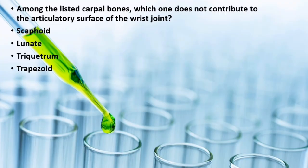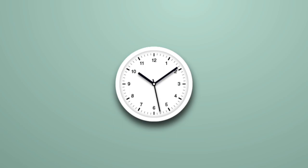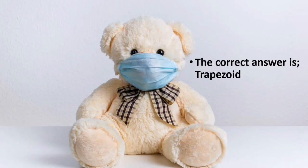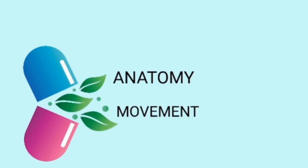Quiz: Among the listed carpal bones, which one does not contribute to the articular surface of the wrist joint? Scaphoid, lunate, triquetrum, or trapezium? The correct answer is trapezoid.